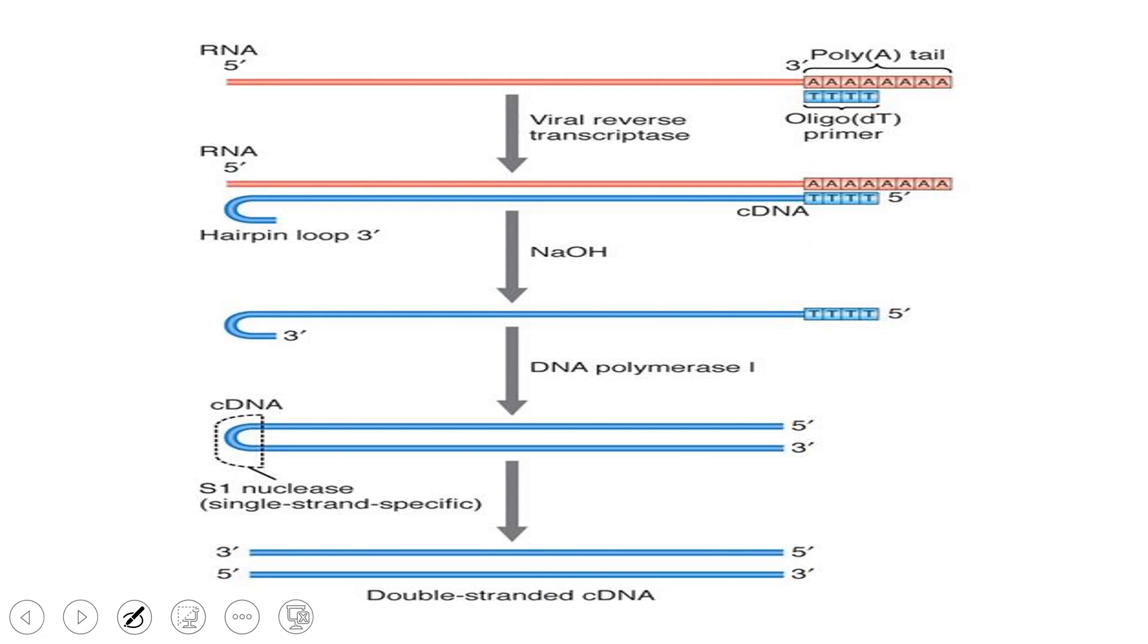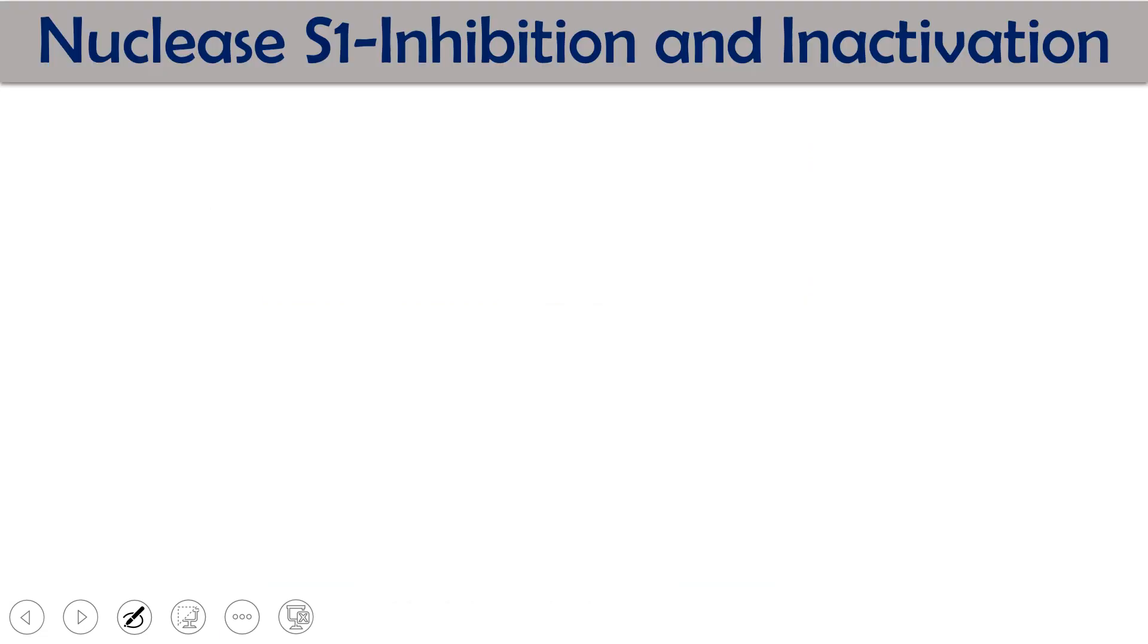This is the cDNA and this is the messenger RNA. Reverse transcriptase normally forms a hairpin loop ultimately, and this is the hairpin loop in the cDNA. Because this single oligonucleotide sequence is there, we need to remove this hairpin loop and it will be removed by S1 nuclease. This S1 nuclease helps in the removal of hairpin loop from the cDNA at the time of cDNA creation or cDNA library creation.